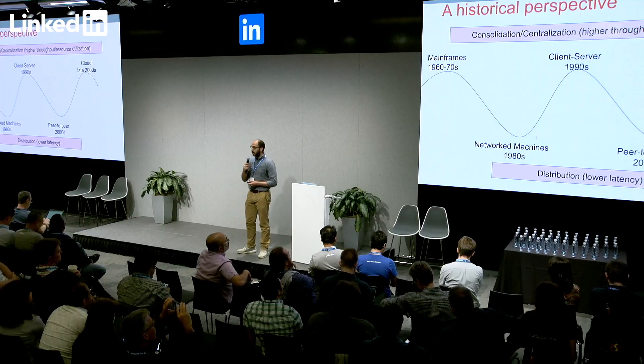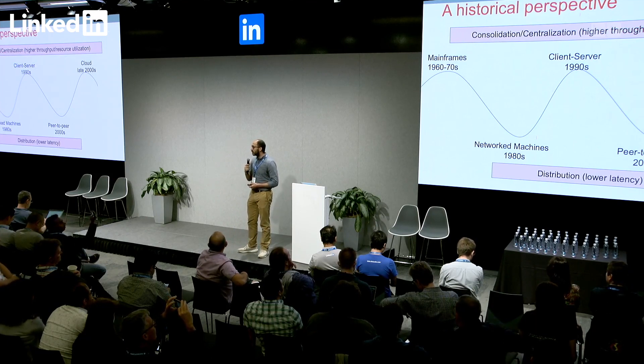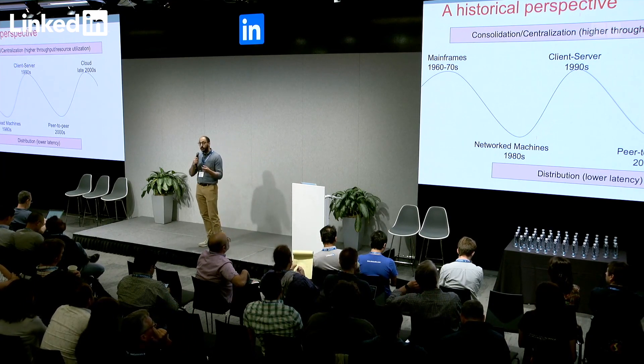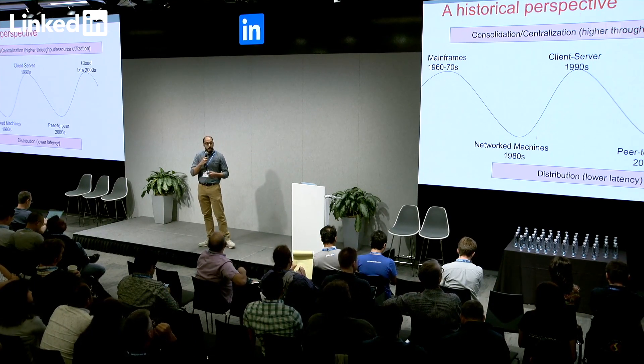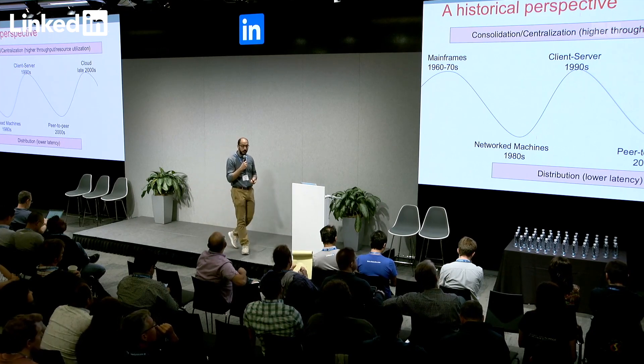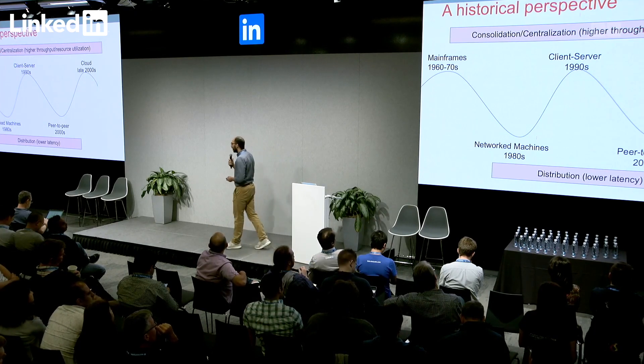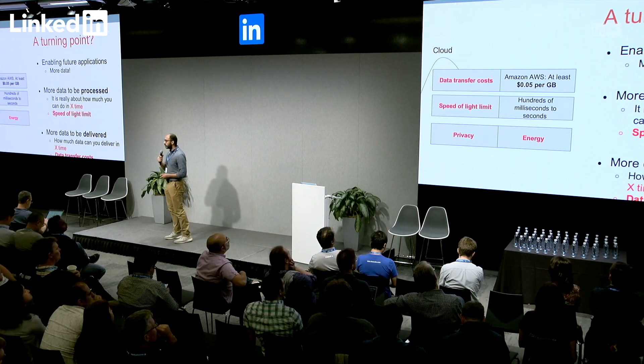Consolidation allows us to put things together and utilize resources more efficiently. But at the same time, consolidation sometimes might be limited, and we go for the other force — distribution — so that we can be closer to users and overcome some of the limitations of consolidation. And what I want to ask right now is whether we are now at a turning point: whether we are moving from this consolidated phase, which is the cloud, into one that is more distributed. We are reaching the limits of what the cloud can give us.